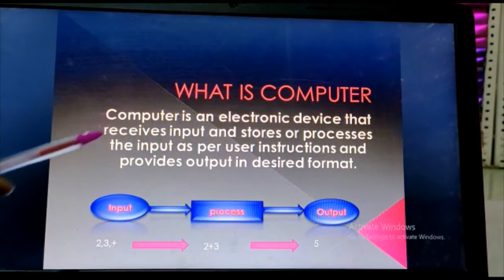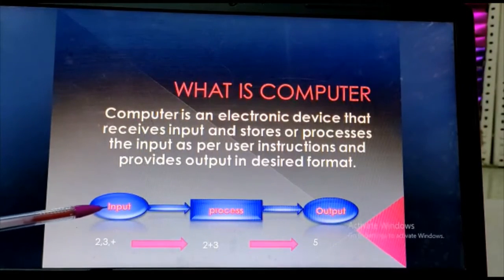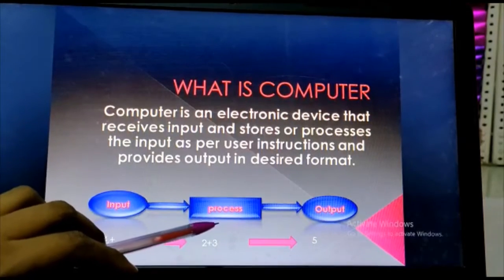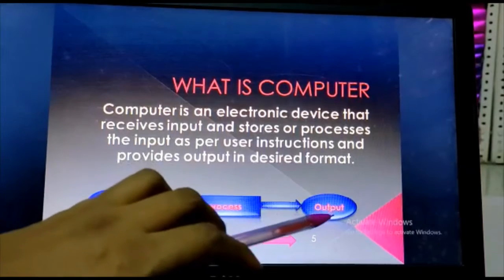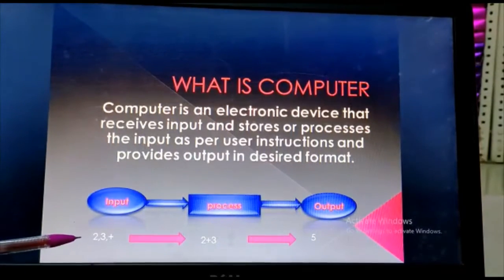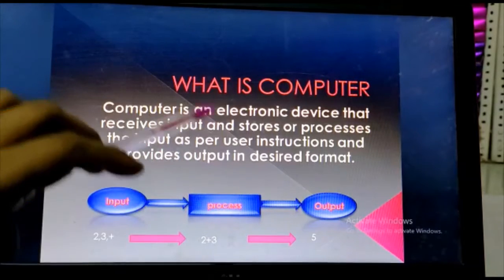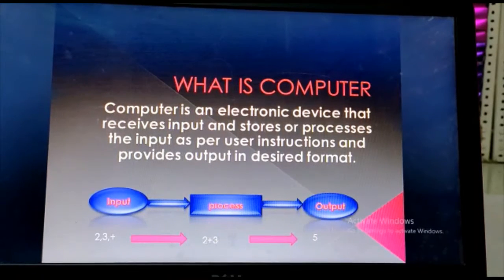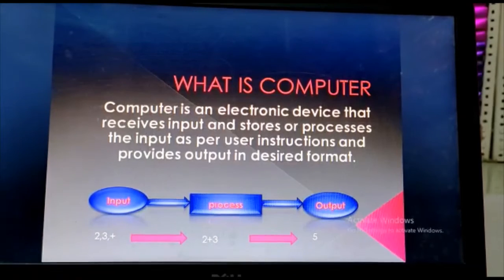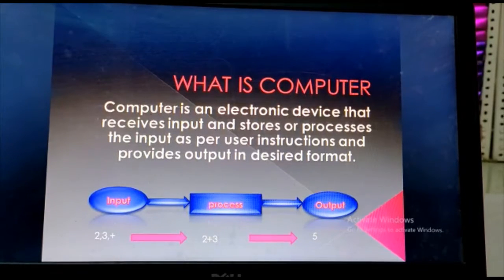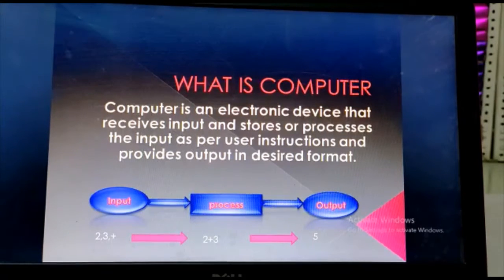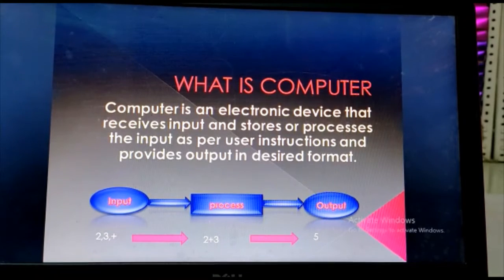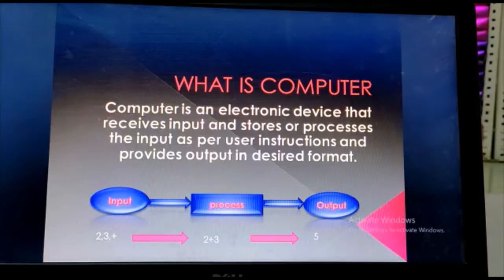Which means computer takes inputs or instructions from the user and processes those instructions and gives the output in desired format. Let us take an example to understand the work of computer. For example, if we want to add two numbers like 2 plus 3, we input two numbers 2, 3 and plus operator. And the computer processes that operation, that is addition 2 plus 3, and the computer gives the output that is 5.